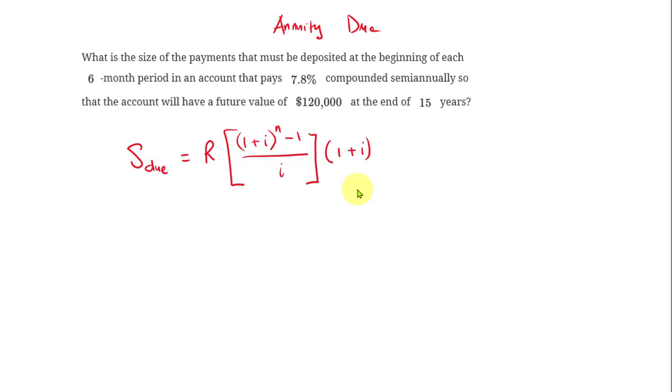Now in this case, we want the future value to be $120,000, so S due should equal $120,000. And the one that we are looking at is the R value. R value is the amount that we make the deposit at the beginning of each six-month period. This is the regular payment that we are looking for.